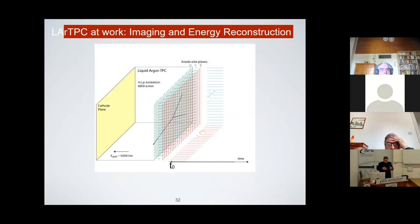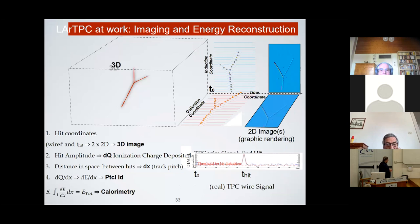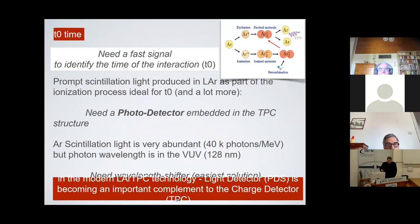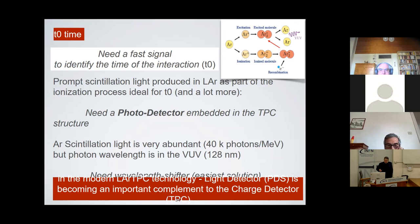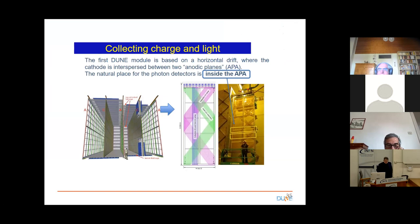Liquid argon is a pretty good scintillator — it emits about 40,000 photons per centimeter for a minimum ionizing particle. So you install a light collection system used both to give you the T0 and to independently measure the calorimetry of the track. To cover such a big surface, you need a concentration system. The one invented for this is called ArauCa — when light hits the interface it gets shifted, then passes through a dichromatic filter which forces it through to your sensor. This has proven very effective in the prototypes.